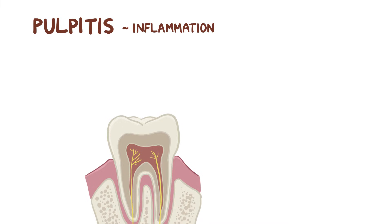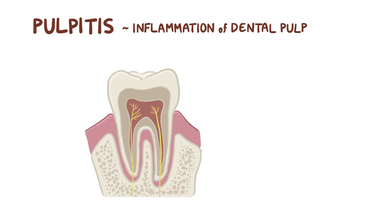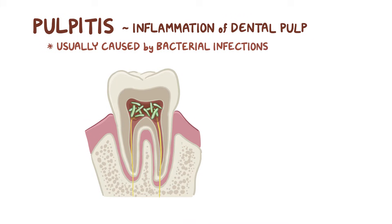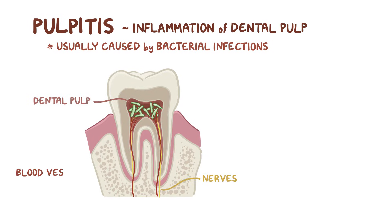Pulpitis is inflammation of the dental pulp, and it's usually caused by bacterial infections. The dental pulp is the soft inner section of the tooth that houses the nerves and blood vessels that nourish the tooth. If the pulp gets inflamed, these nerves get activated really intensively.